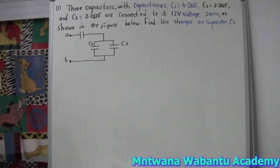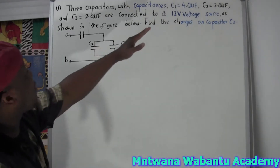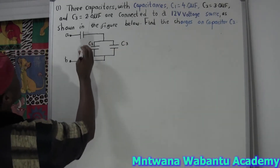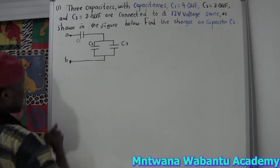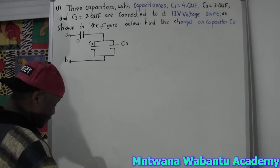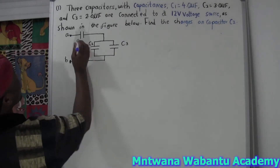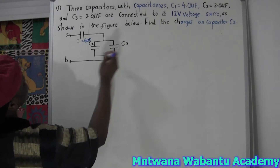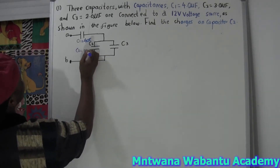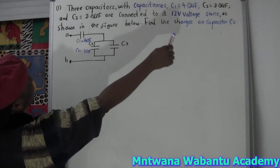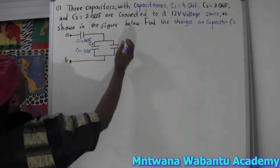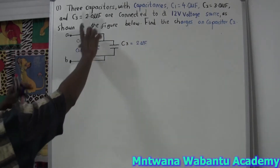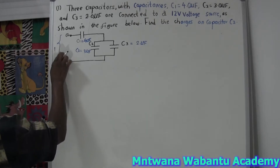Let's get started. We have three capacitors with different capacitances: C1 = 4 microfarad, C2 = 3 microfarad, and C3 = 2 microfarad. All of these are connected to a 12-volt source.